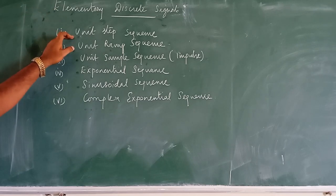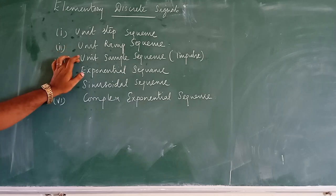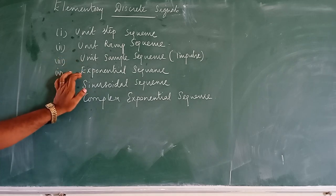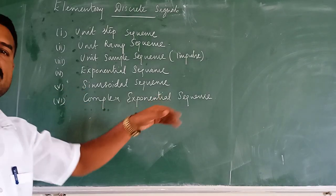The first one is unit step sequence, second one is unit ramp sequence, and third one is unit sample sequence or it may be called unit impulse sequence. The fourth one is exponential sequence and the fifth one is sinusoidal sequence. Finally we are going to see the complex exponential sequence.